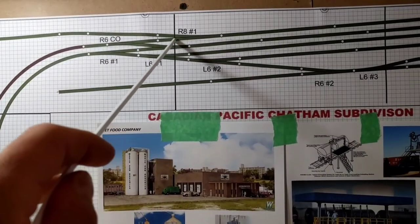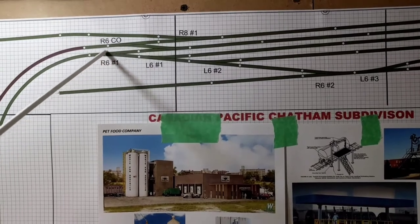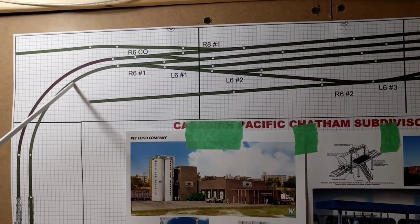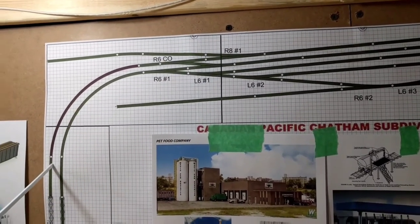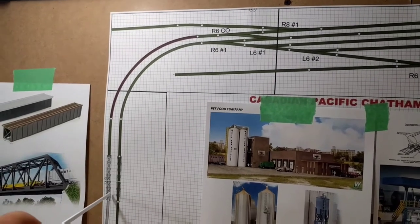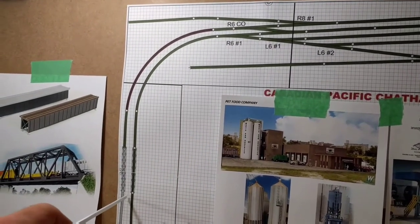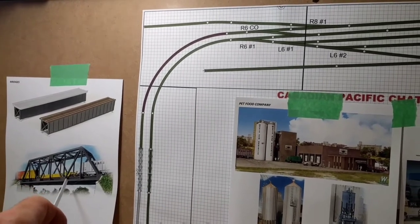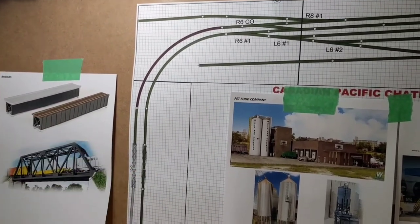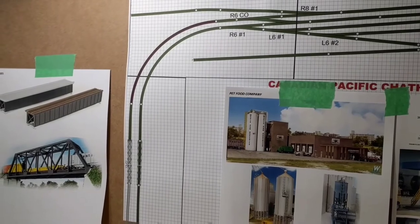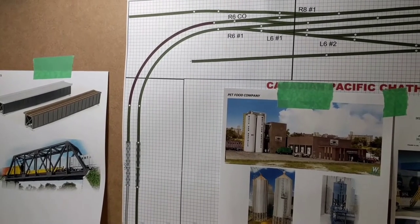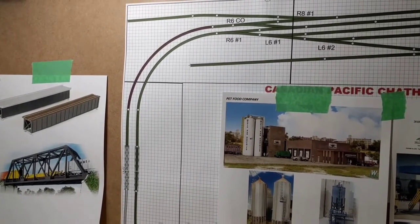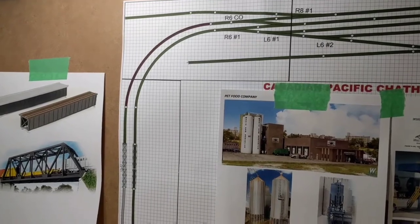Once it passes this switch, the main line goes into a 26 radius curve into a scenery element, and you're gonna have a bridge here. The back bridge is gonna be a truss bridge as you can see. So that's gonna be the main line, and that's gonna service primarily my trains going through and my Via Rail local.